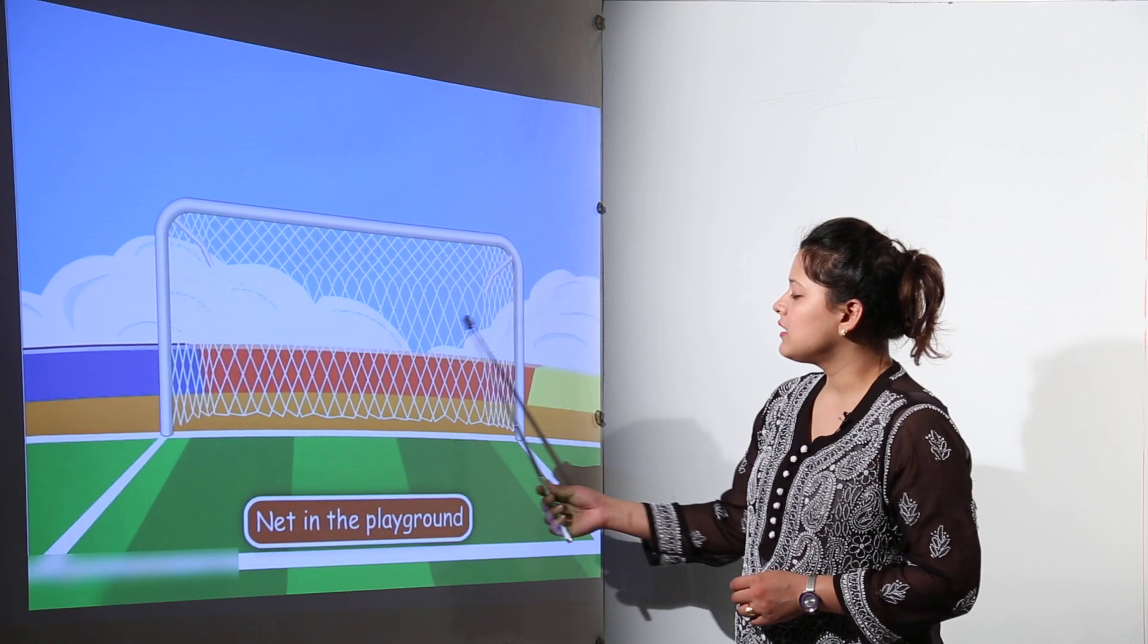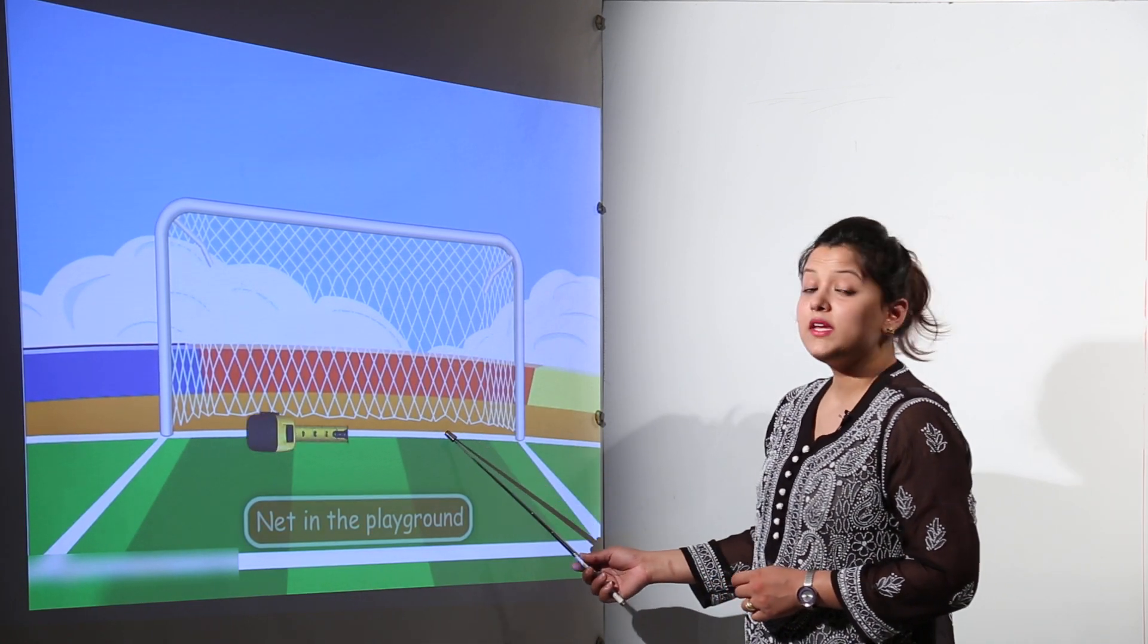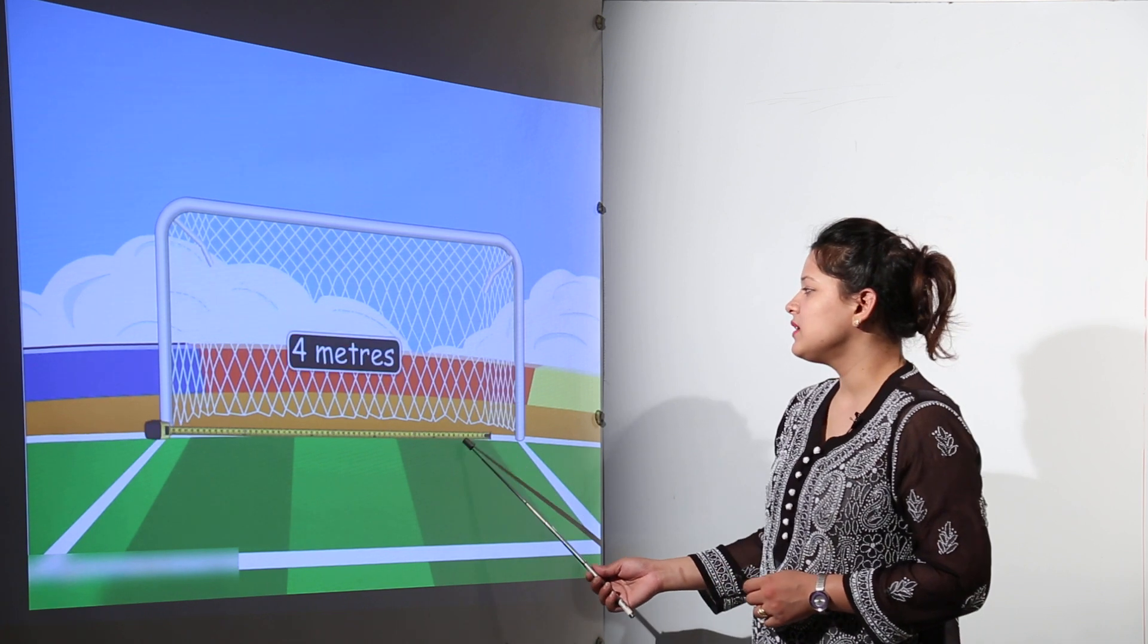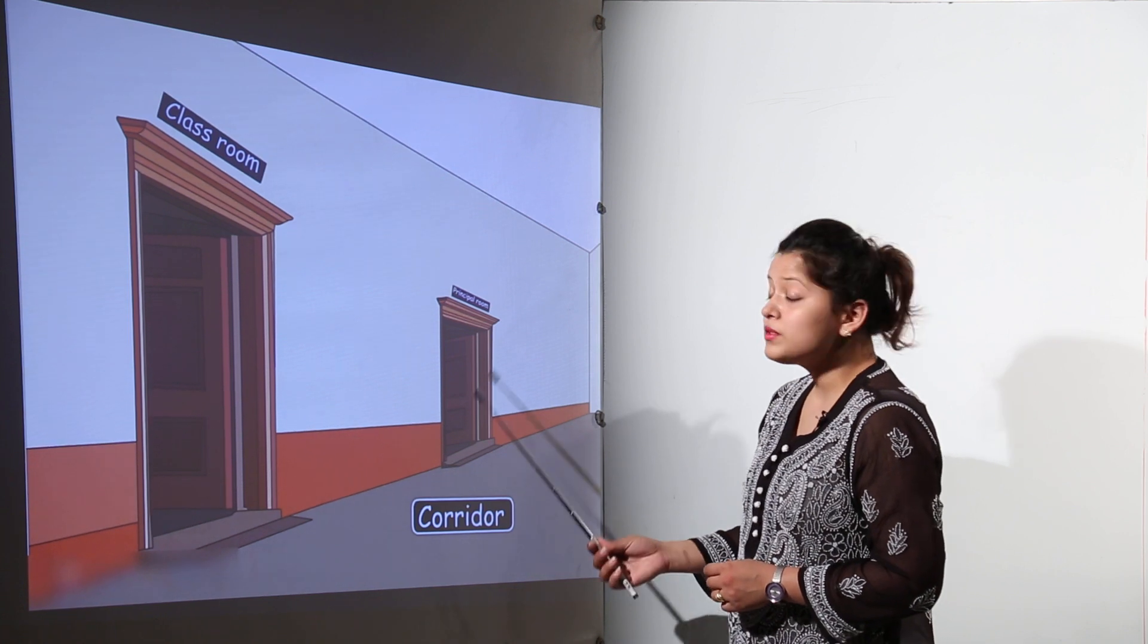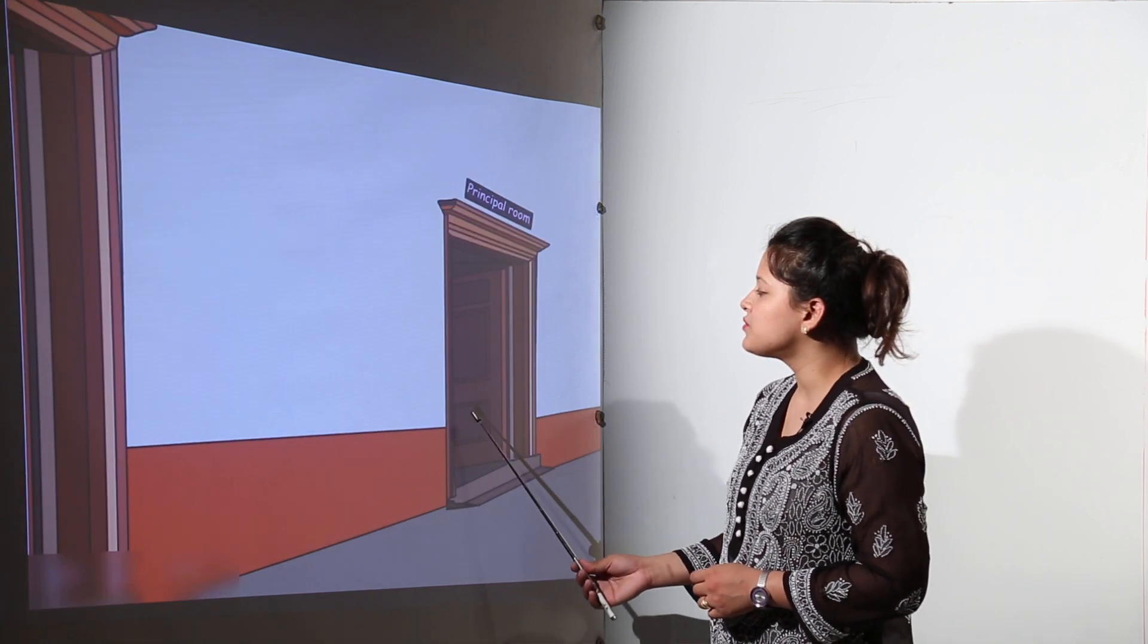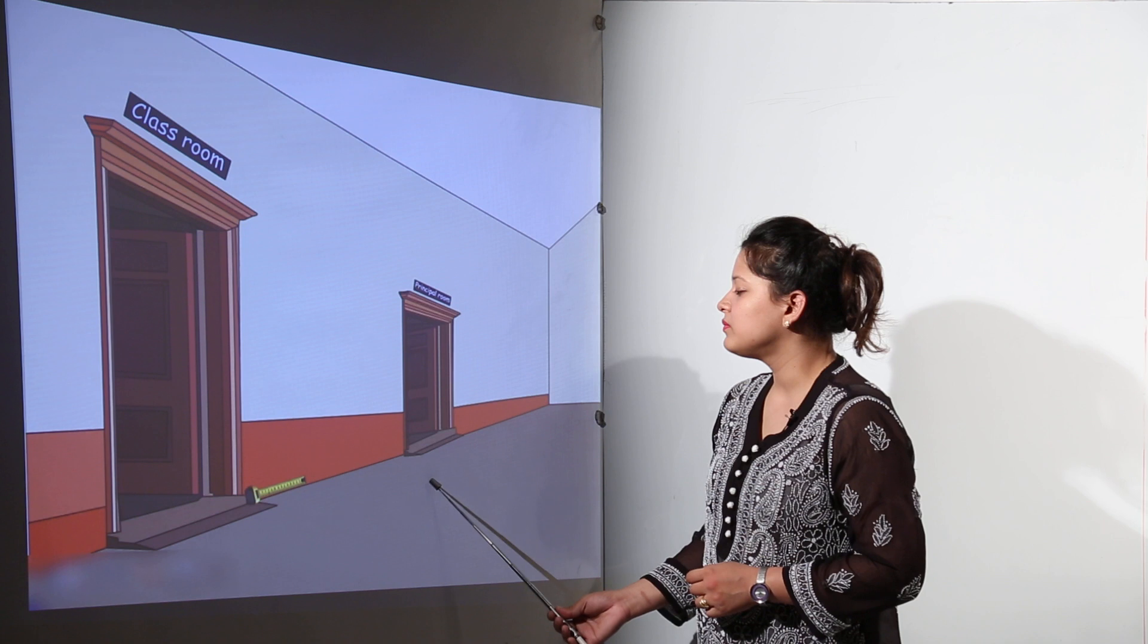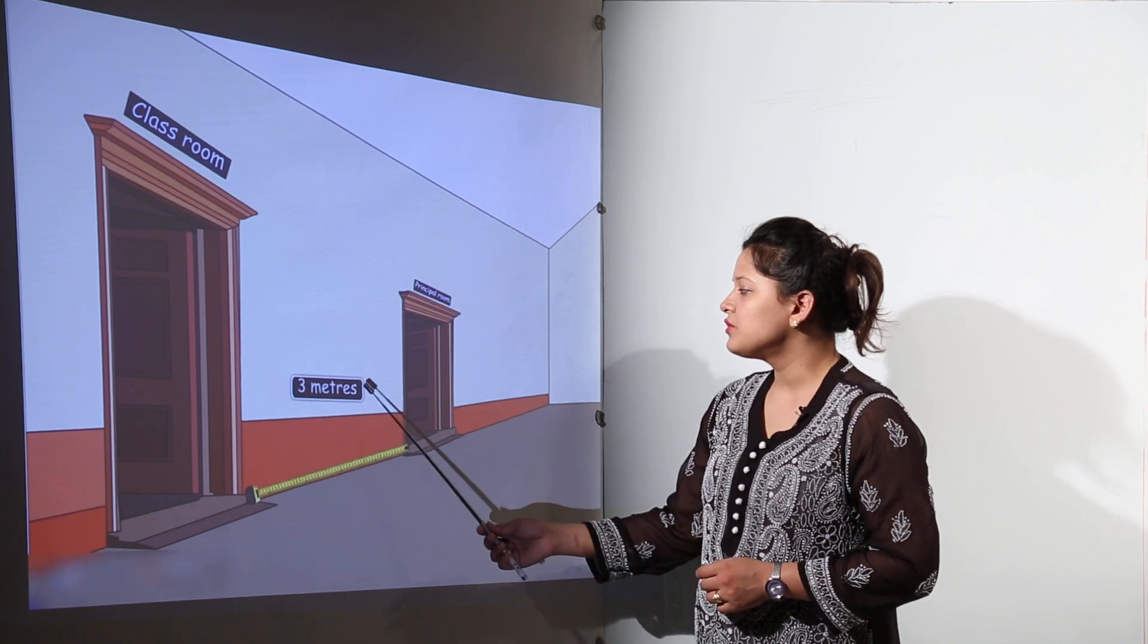Here is a net in the playground. We can measure its length by using the meter scale. Here that is 4 meters. We can also measure the length between the classroom and the principal's room and that is 3 meters.